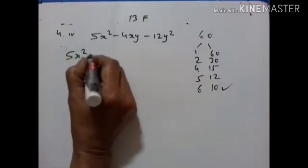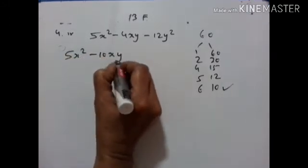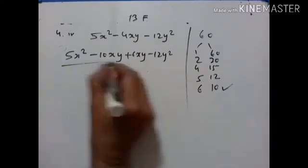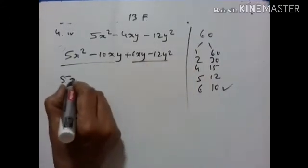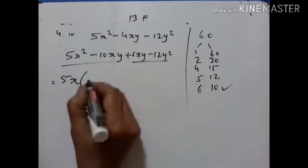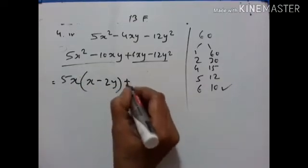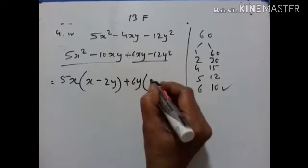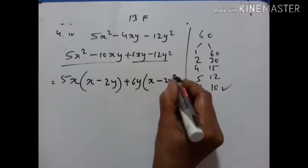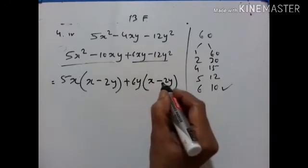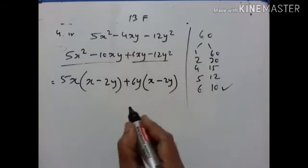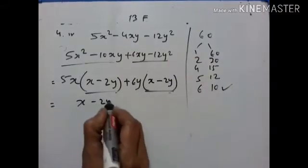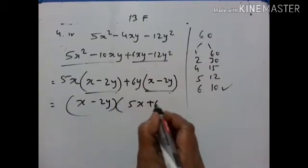So we write 5X² minus 10XY plus 6XY minus 12Y². Here 5X is common, giving X minus 2Y. Plus 6Y is common, giving X minus 2Y. So X minus 2Y is common, and what remains is 5X plus 6Y.